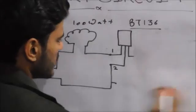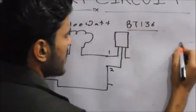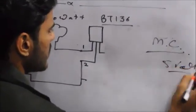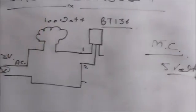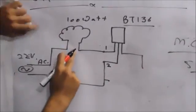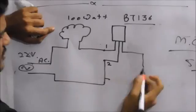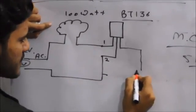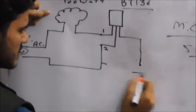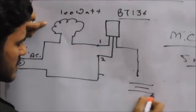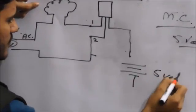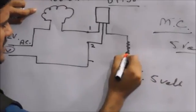Now we will change the circuit slightly. Generally we feel the need to trigger our AC appliances using a microcontroller, and microcontrollers generally give 5 volts. So now we will make this bulb turn on or off using a 5 volt battery.